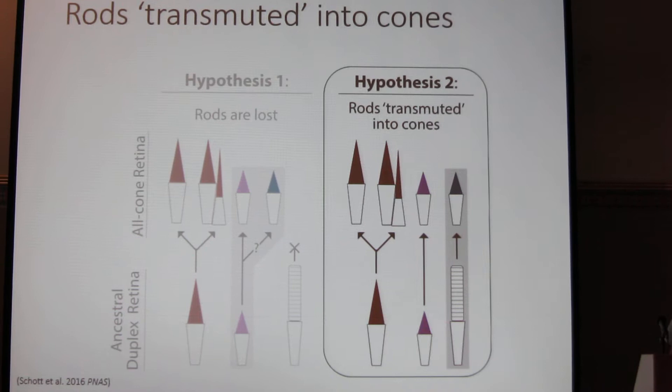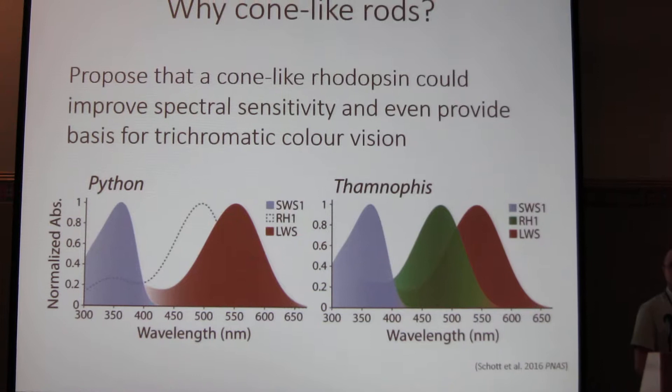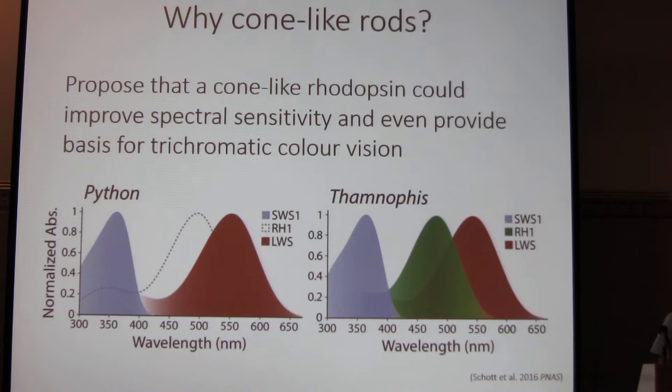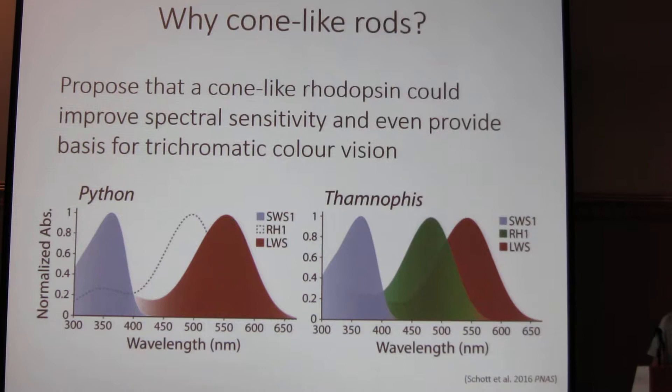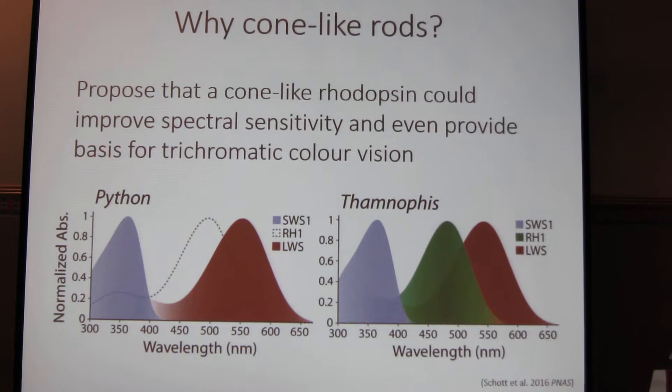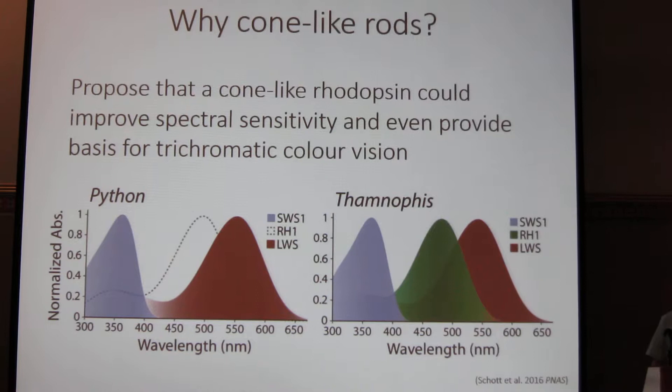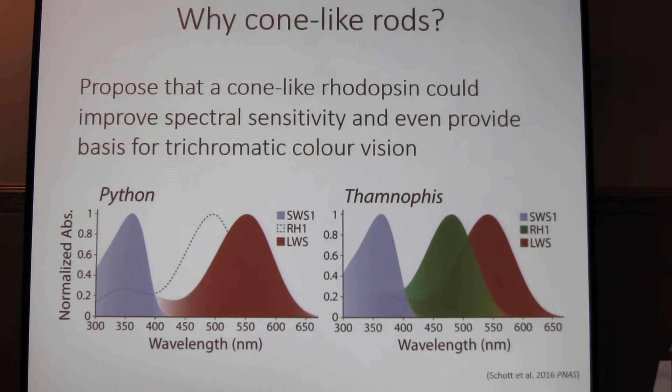But the question remains: why would we want to have cone-like rods? It might seem a little disadvantageous because in most animals you really need that rod — if you ever encounter a dim-light condition and you lose it, you're going to really lose your dim-light sensitivity. However, since there's a large gap in spectral sensitivity when we have the other photoreceptor types, the rhodopsin may be able to fill that in and help extend the range of spectral sensitivity in these snakes, and also provides the basis for a potential trichromatic visual system.